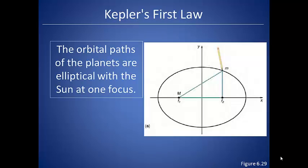Eventually, he came up with a series of three laws that explained planetary and orbital paths. His first law says that the orbital paths of the planets are elliptical with the sun at one focus. So the planets do not orbit the sun in a perfect circle. They travel in an ellipse with the sun as one focus of that ellipse.